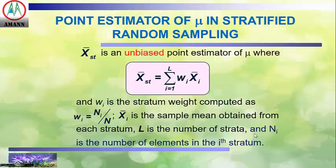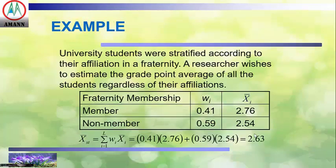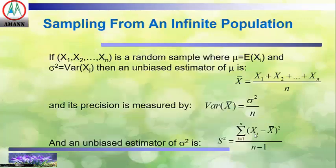In stratified sampling, x-bar is an unbiased point estimator of mu, where x-bar equals the summation of W times x-bar for each stratum. Here W is the stratum weight computed as N_h over N, x-bar_h is the sample mean from each stratum, L is the number of strata, and N_h is the number of elements in the h-th stratum. Example: students were stratified according to fraternity affiliation. A researcher estimates the grade point average of all students. Using the stratum weights W and stratum means x-bar, the estimate is 0.41 times 2.76 plus 0.59 times 2.54, which equals 2.63.